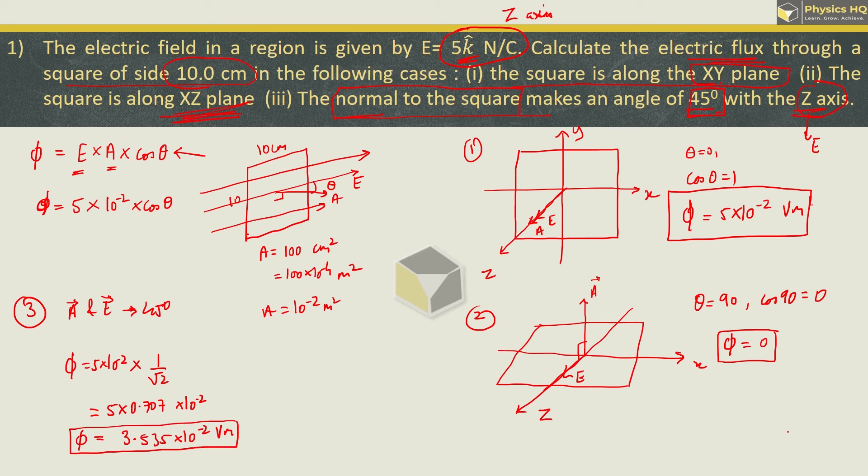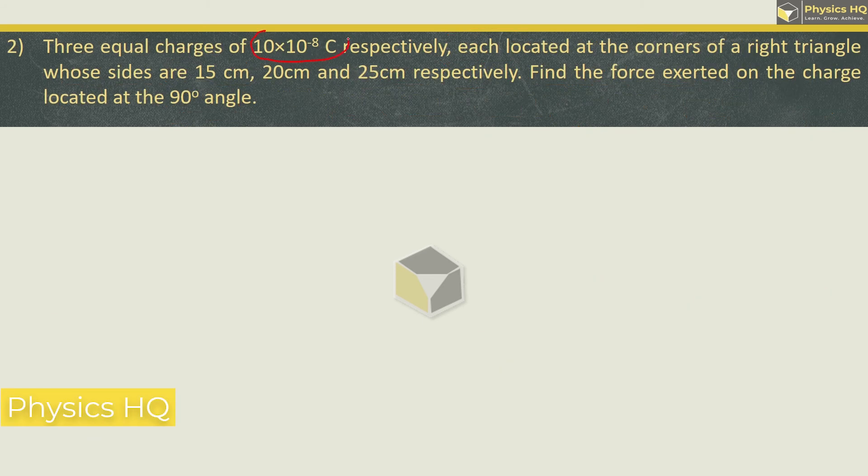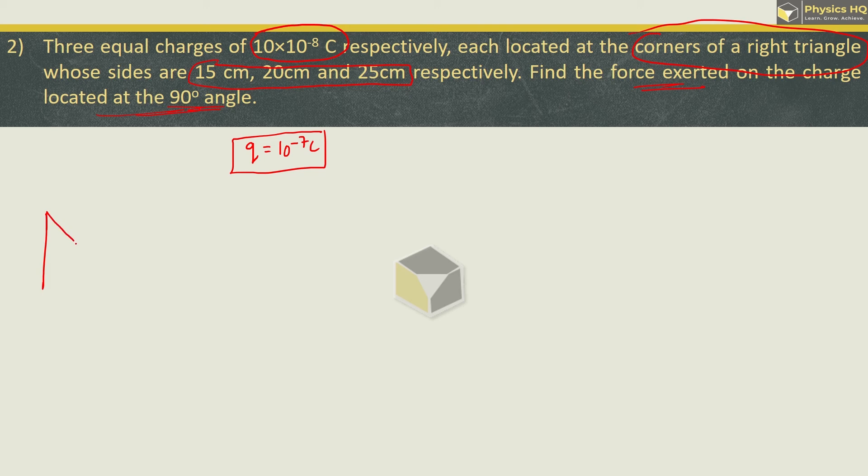Hope you all understood this. Next sum: Three equal charges, 10 into 10 raise to minus 8 coulombs or charge 10 raise to minus 7 coulombs respectively, are located at the corners of a right-angled triangle, whose sides are 15, 20 and 25 cm. Find the force exerted on the charge located at the 90 degree angle. So, let us say this is a triangle, this is 15, this is 20 and this is 25 cm. This angle is 90 degrees. And we have to find the charge on the 90 degree angle. Let us label the vertices.